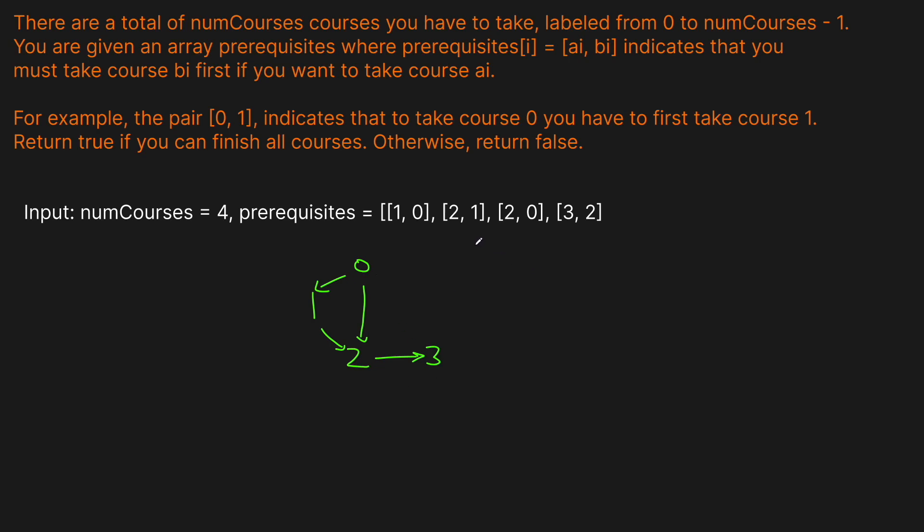This seems like a simple DFS — can we reach all courses? The way we're going to solve it is with something called a topological sort. If you don't know what that is, I highly recommend pausing and watching TechWith Tim's video on topological sort — it's about 10 minutes and walks you through the basics. To recap: topological sort is a sorted ordering of nodes in a graph such that children always come before the parent in the ordering.